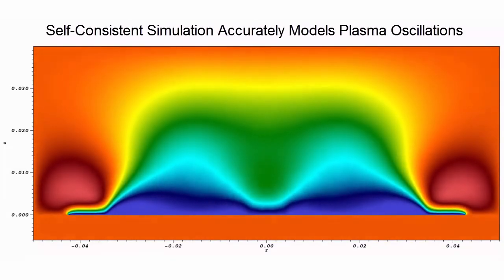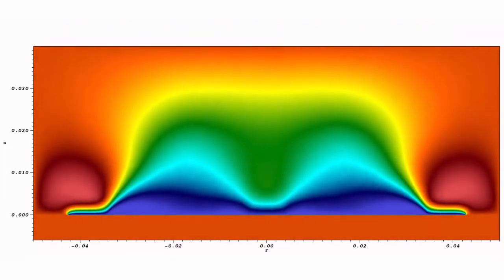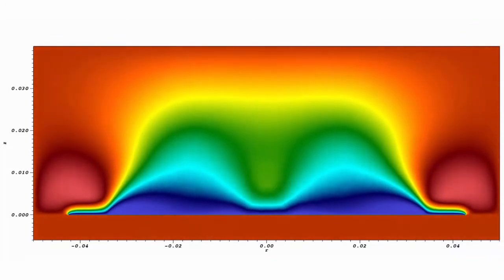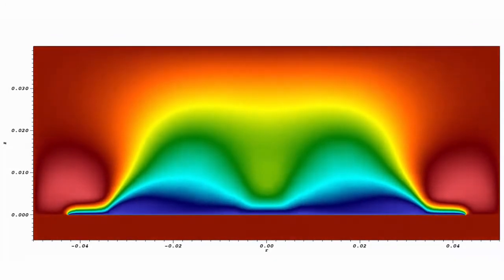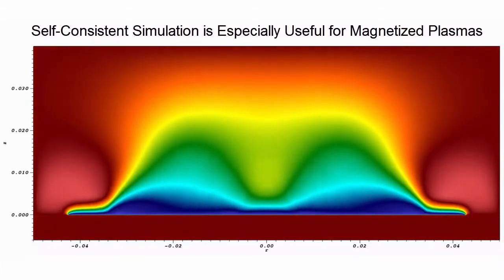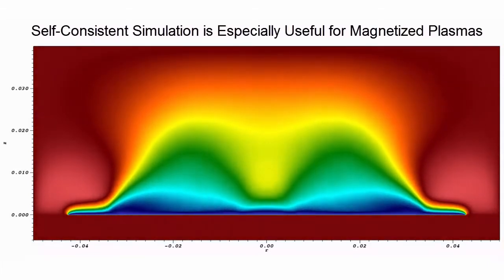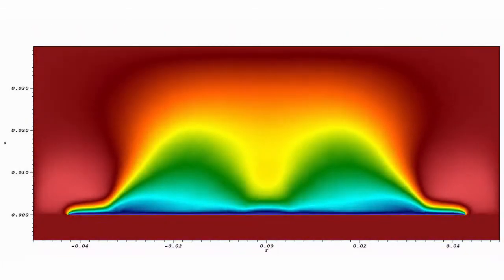With VSIM, the plasma sheath emerges automatically from the physics, all in one simulation, without any need for separate estimates of the sheath properties. This is especially useful for magnetized plasmas where the analytical models become difficult.